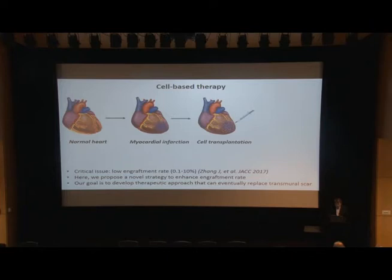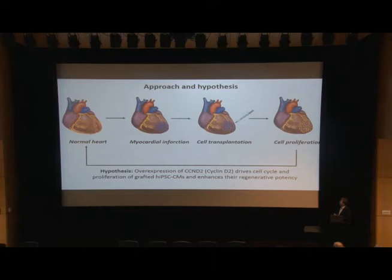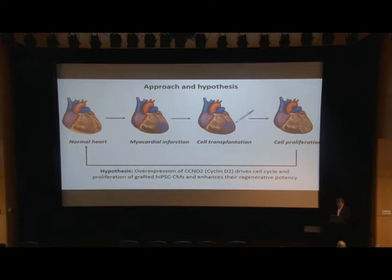Our goal is to develop a therapeutic strategy to eventually help replace the transmural scar, but this is a problem that has not been addressed yet. The hypothesis for the study is to induce proliferation of transplanted cells so that the surviving cells can eventually repopulate the injured heart. The strategy we used is overexpression of Cyclin D2, a well-known gene that drives cell cycle progression, which has been demonstrated to drive cell cycle in adult cardiomyocytes in transgenic mice.